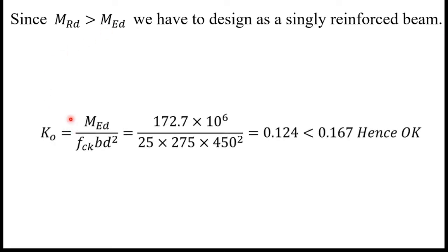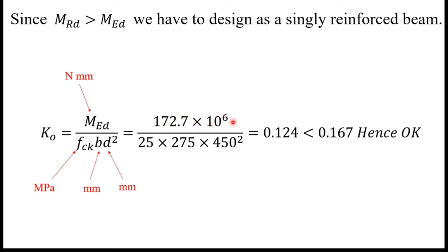Next we find K, where K = MED / (FCK·B·D²). MED is substituted in Newton millimeters, FCK in megapascals, and B and D in millimeters. The 10⁶ factor handles the unit conversion. Substituting all values and simplifying, we get K = 0.124. Since 0.124 is less than 0.167, this value is acceptable.